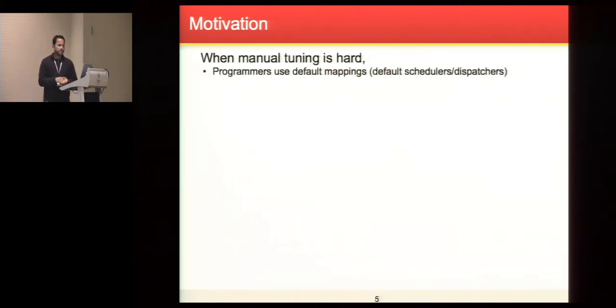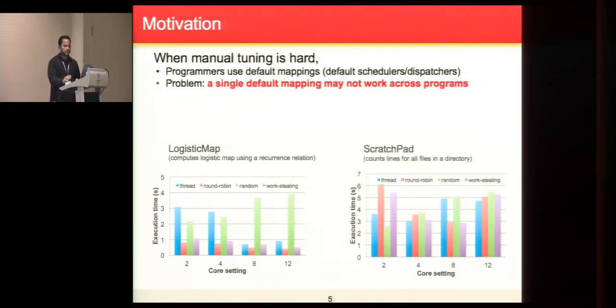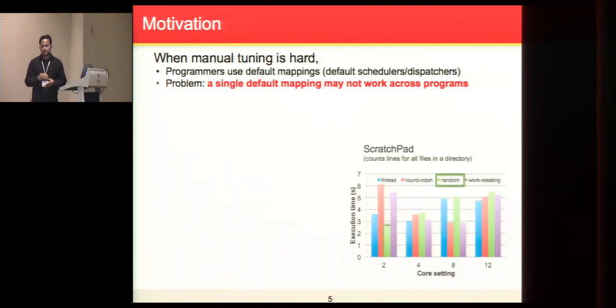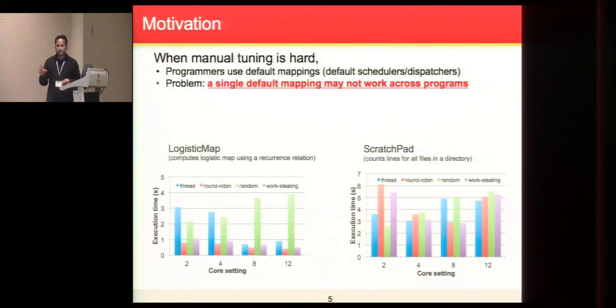Many discussions in open source forums like Stack Overflow suggest that random tweaking without knowing the root cause of the problem may not help. For doing this mapping, one has to really know the nature of the task performed by the concurrent entities. Given that manual tuning is hard, programmers can try to use the default mapping. However, there is a problem that there is no single default mapping that works best across different applications. To illustrate the problem, consider two applications here: Logistic Map and Scratch Power, where Logistic Map computes a recurrence relation and Scratch Power performs line-of-count operation. Here I'm showing the performance of four different default mapping techniques across different core settings. For Logistic Map, we can see that round-robin default technique outperforms all the other techniques. However, for Scratch Power, it's not the case. We can conclude that there is no single default strategy that programmers can initially use on different applications.